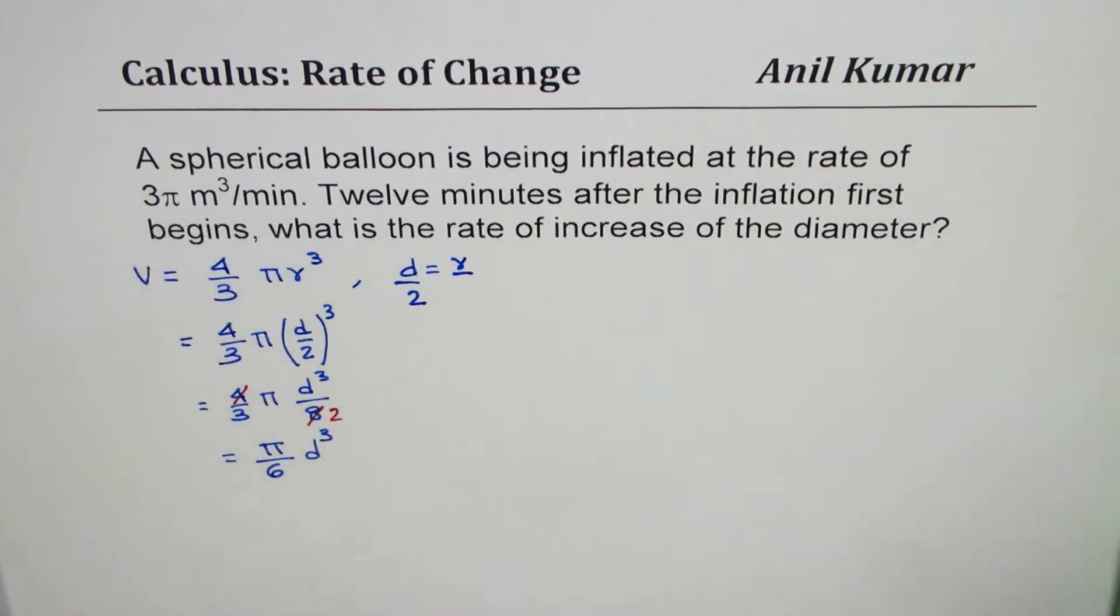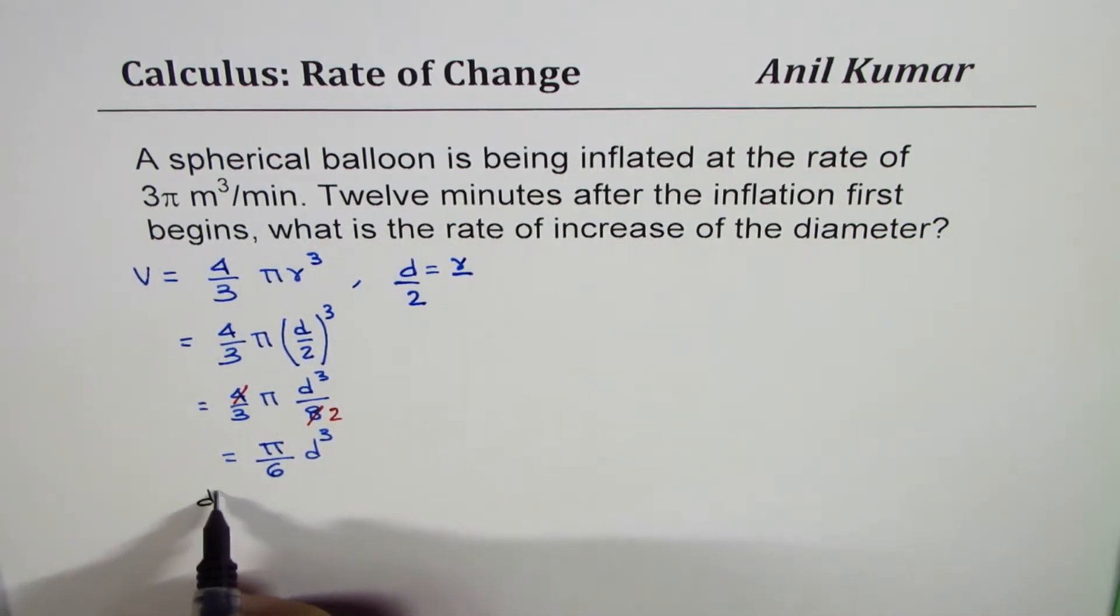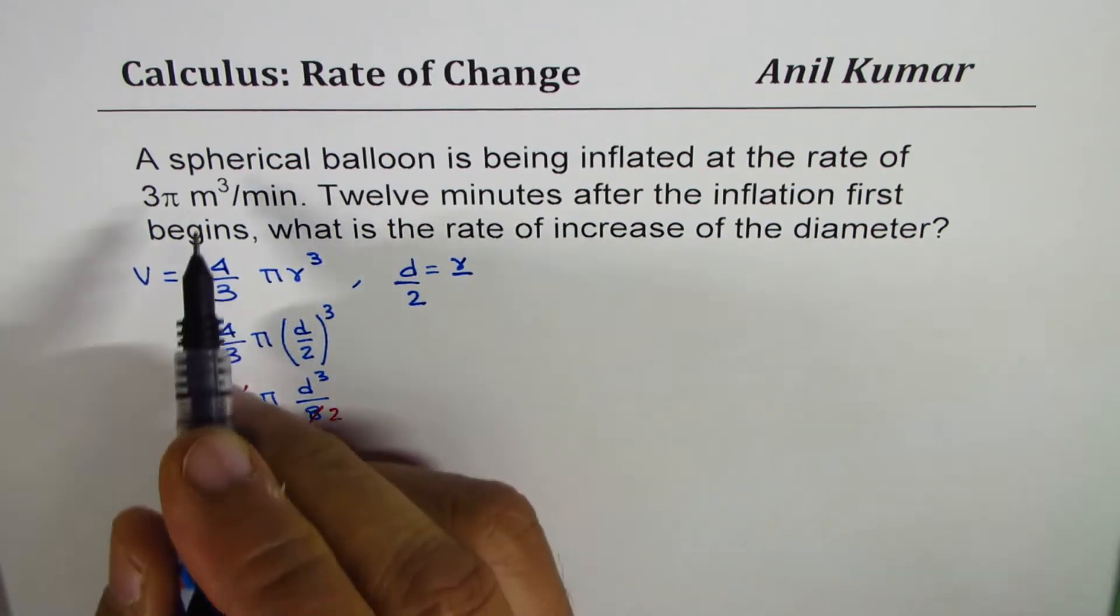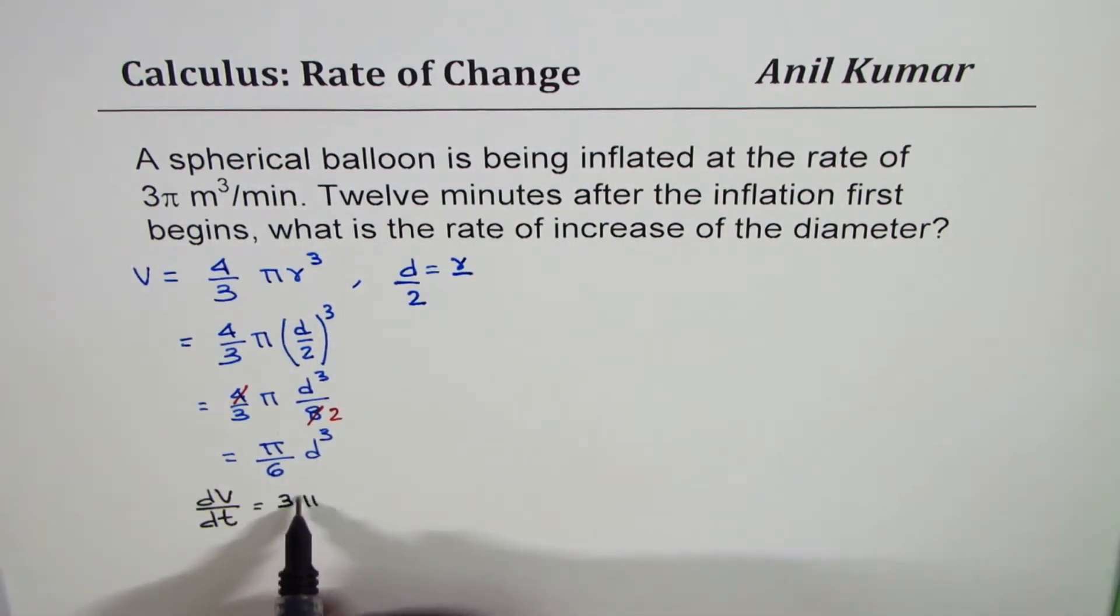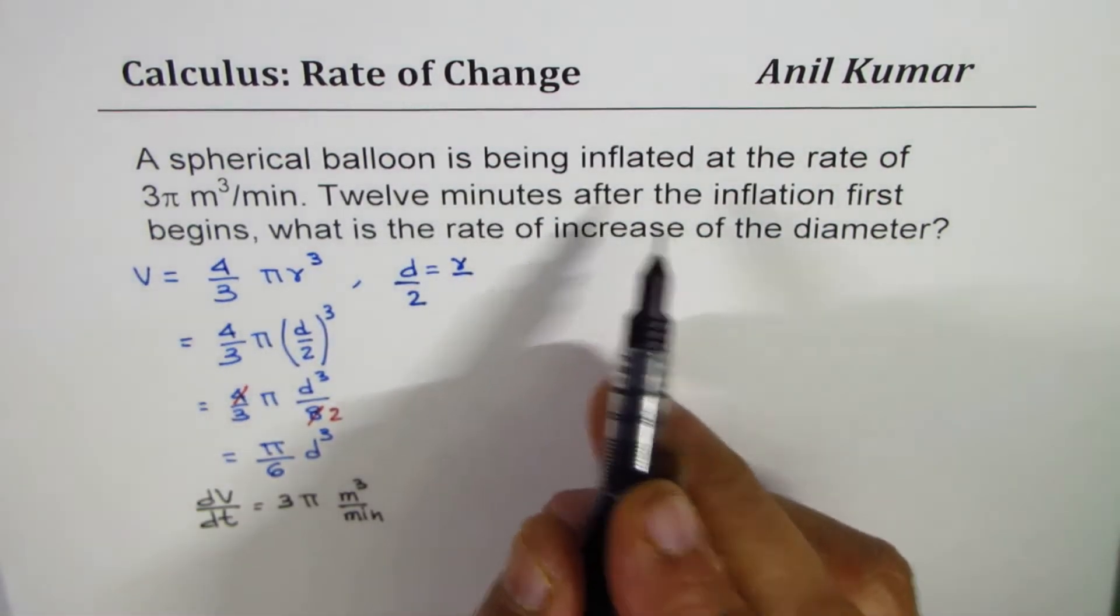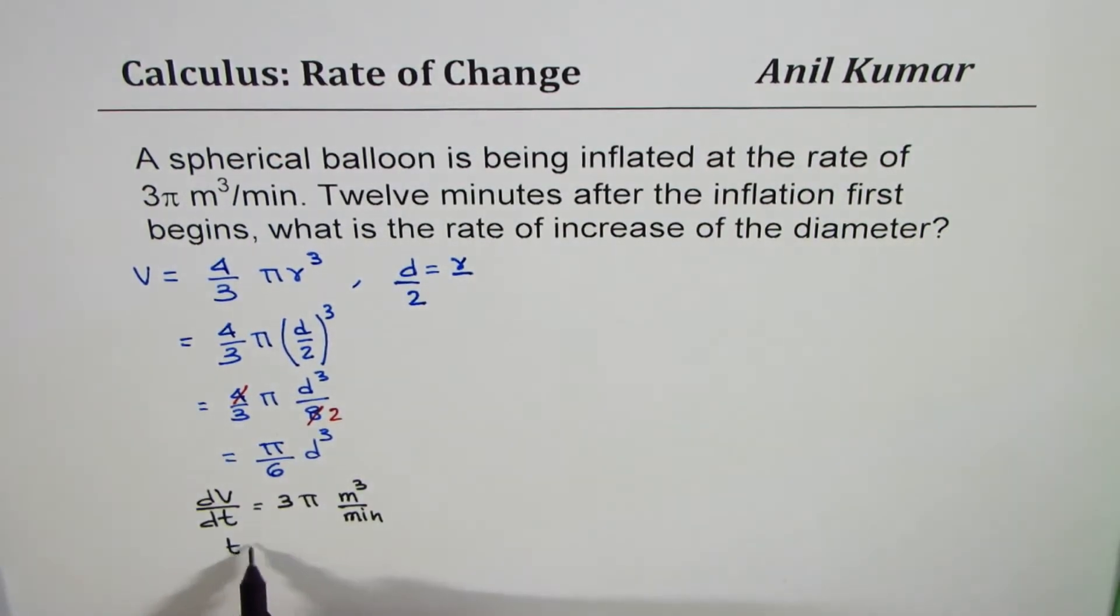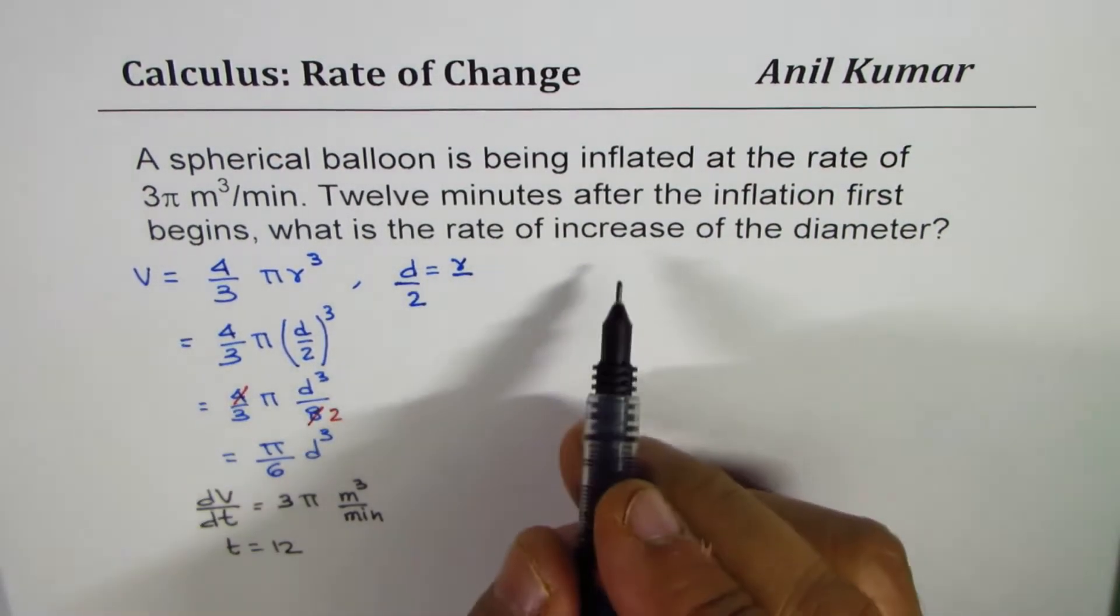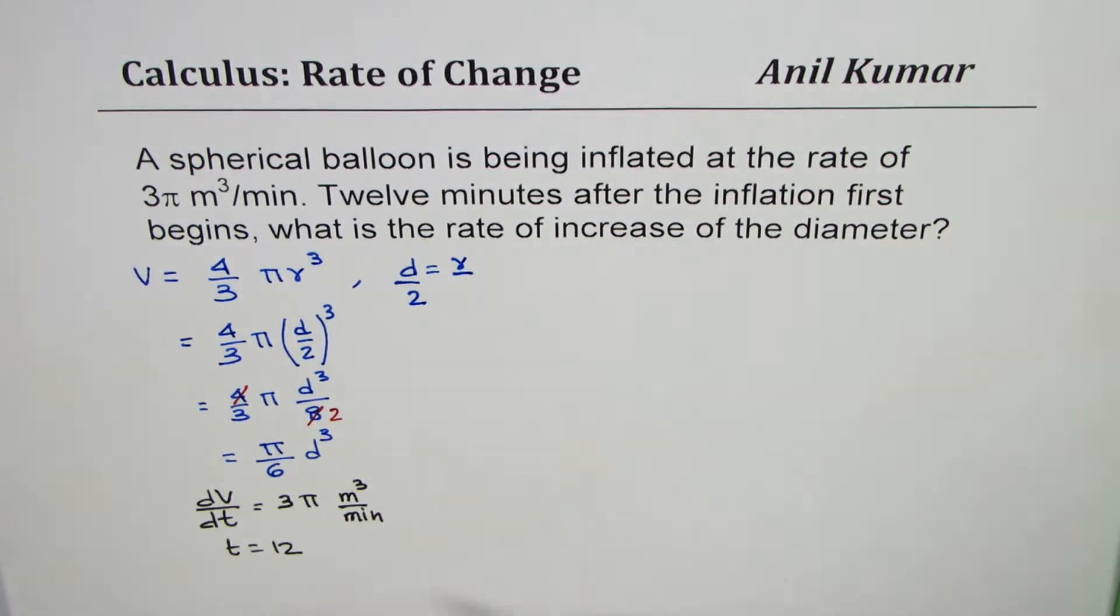The rate of change of volume with time is 3π m³/min. This is given to us. Twelve minutes after that, when t equals 12, what is the rate of increase in diameter? We have to find this.